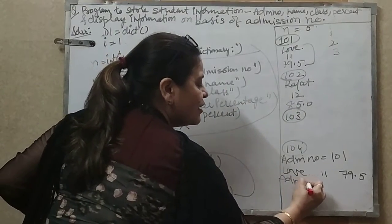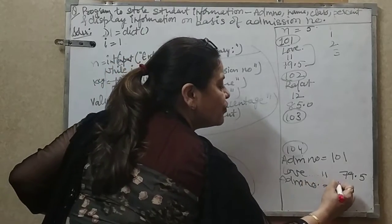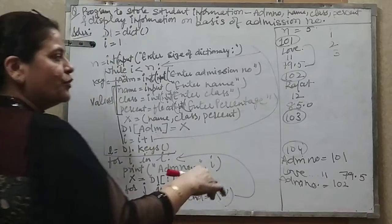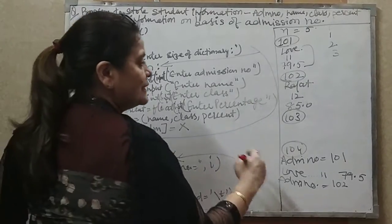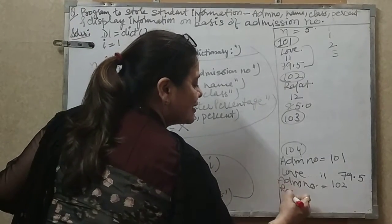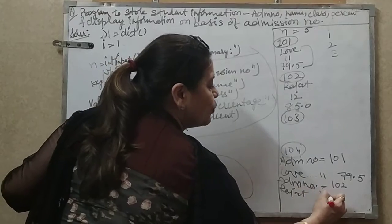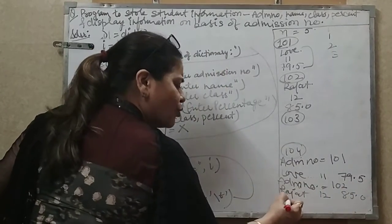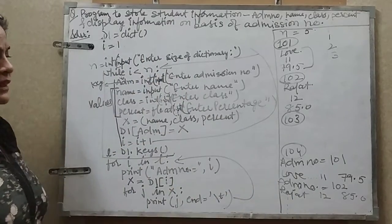So next what will come? A D M N number equals 102. And at 102, jo jo naam dala hai, jo class dali hai, jo percentage dali hai, it will display that. That is Rajat, then it will display 12, then it will display 85.0 and so on. All four records will be displayed in this manner.